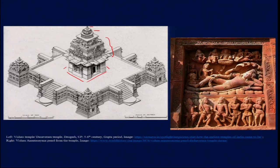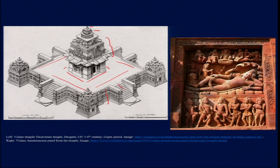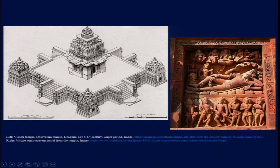The Deogar temple is situated on a high platform called a Jagati — a feature also seen in Buddhist and Jain contexts — showing the sacred structure's divine connections by placing it above regular ground. This high platform has a square ground plan with stairways marking each cardinal direction. The idea of cardinal directions is ingrained in Hindu temple architecture, as well as in Buddhist and Jain contexts, and all these details of the ground plan and elevation come together here.